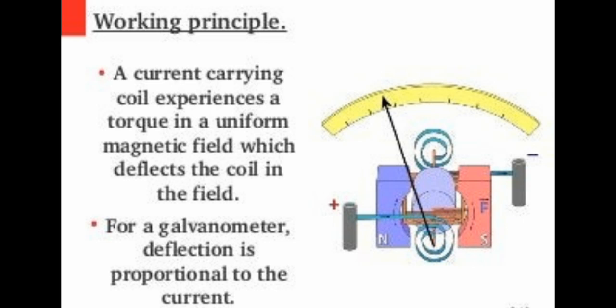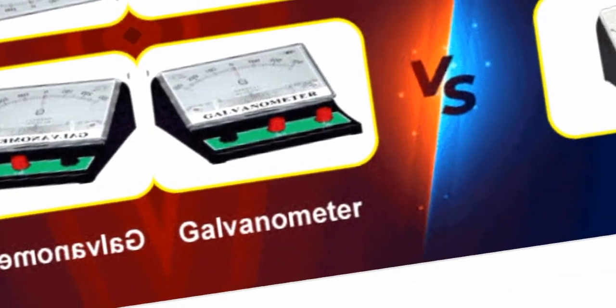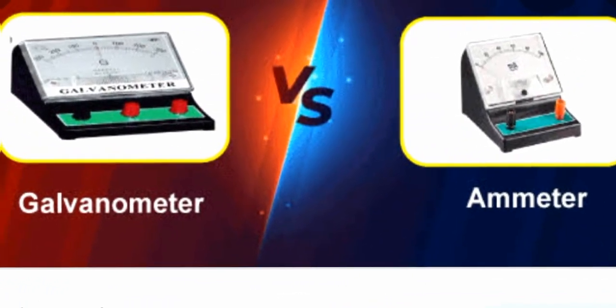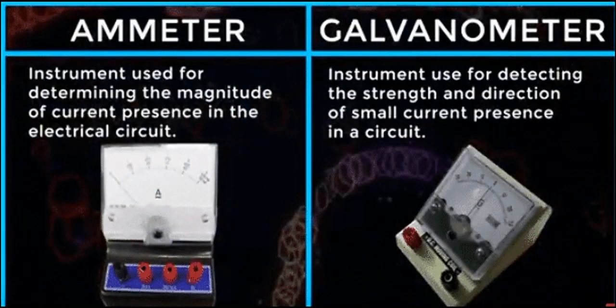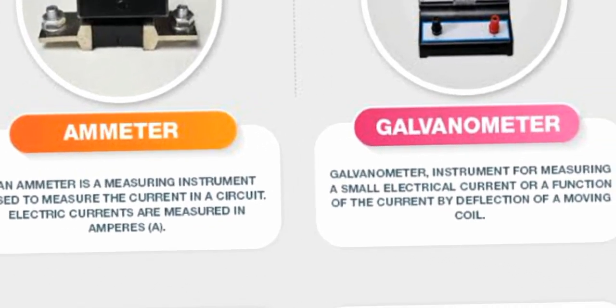You can see in the picture its working principle. Now we will see the basic difference between the galvanometer and the ammeter through their diagrams and pictures. The ammeter is an instrument which is used for determining the magnitude of the current present in an electrical circuit, as shown in its diagram. The galvanometer is the instrument used for detecting the strength and direction of the small current present in a circuit.